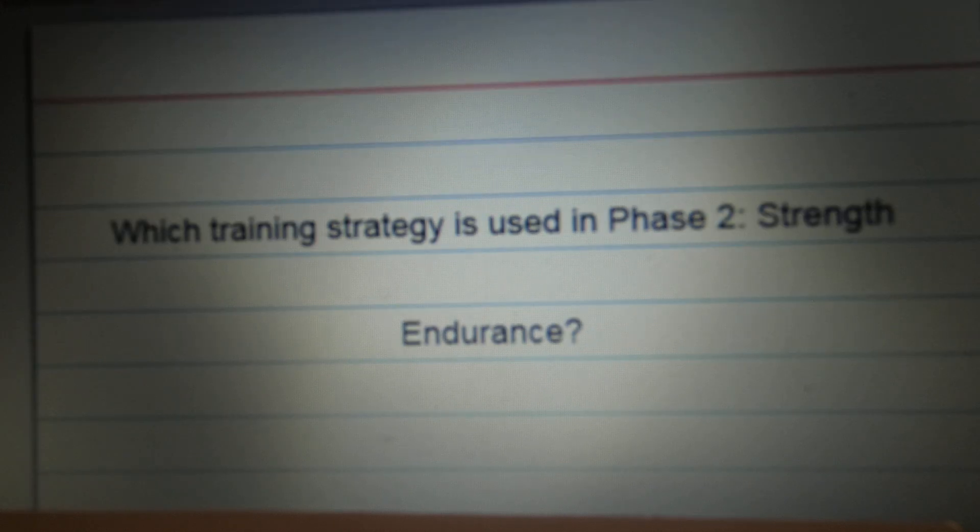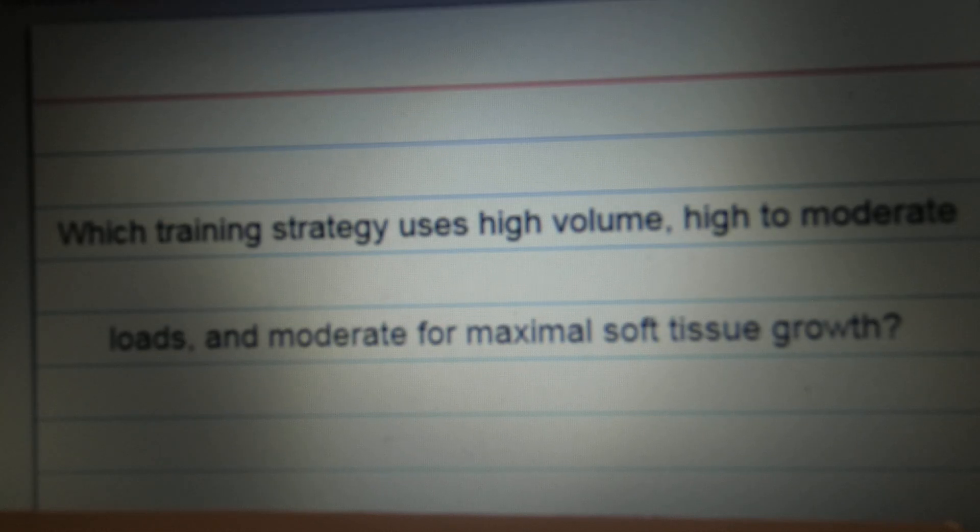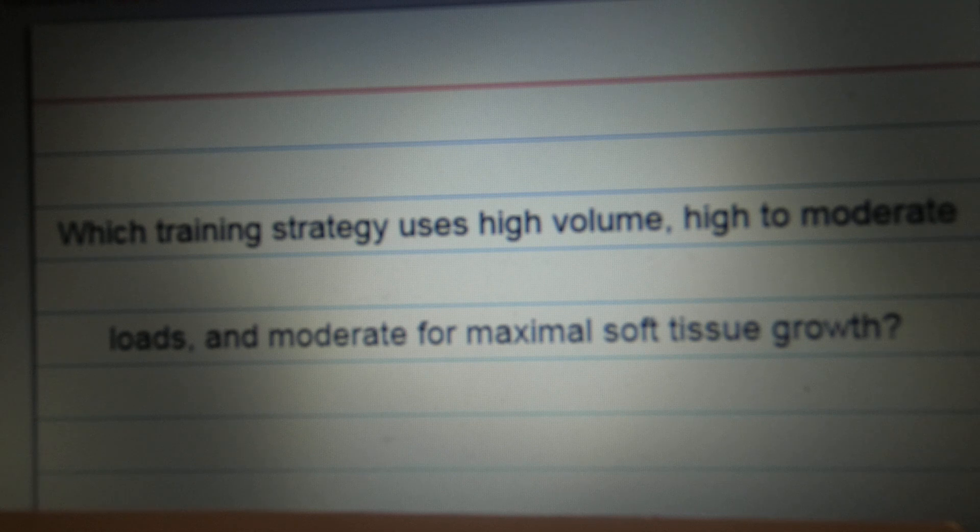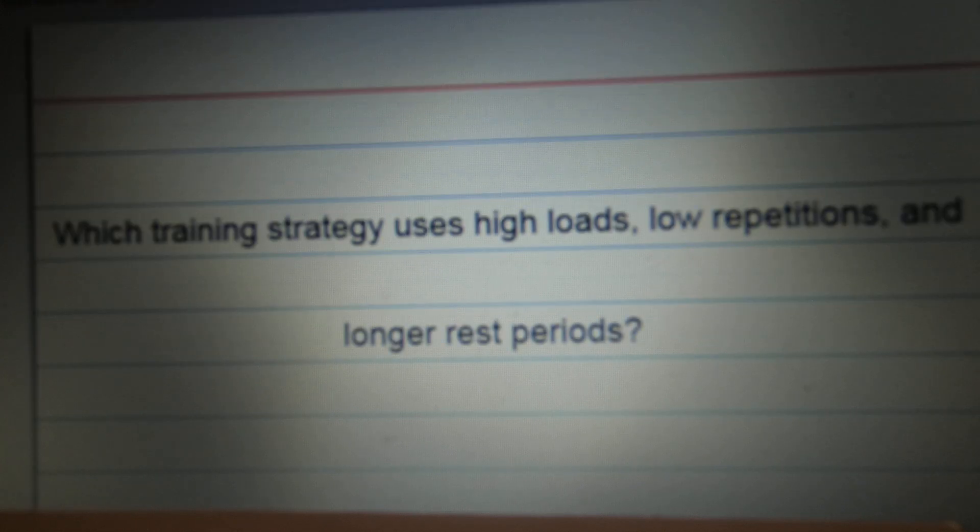Which training strategy is used in Phase 2, strength endurance? Strength and stabilization exercises. Which training strategy uses high volume, high to moderate loads, and moderate for maximal soft tissue growth? Hypertrophy. Which training strategy uses high loads, low repetitions, and longer rest periods? Maximal strength.